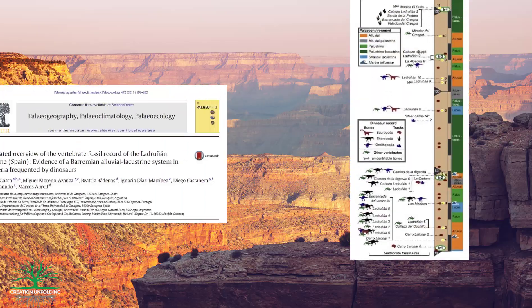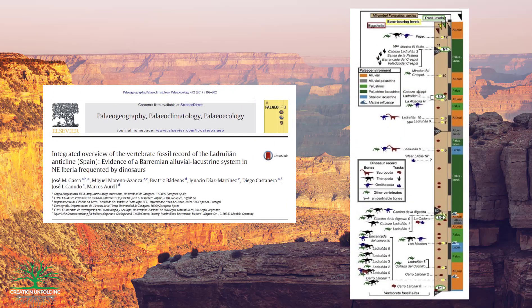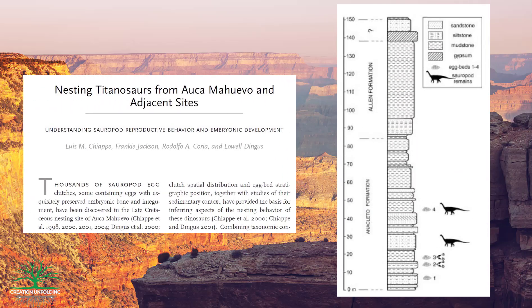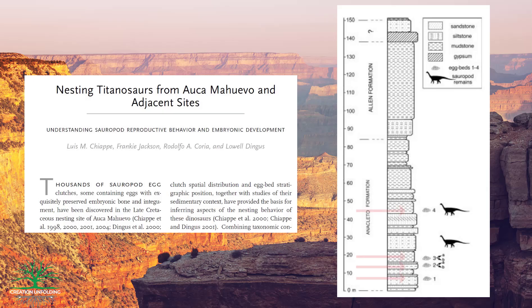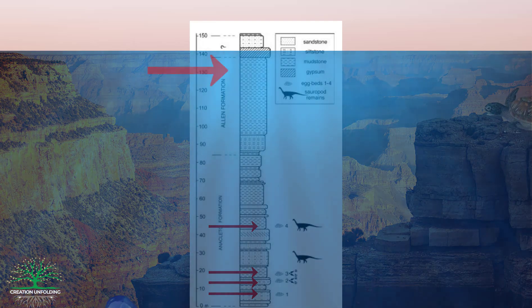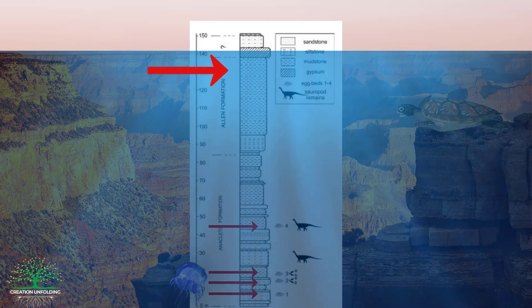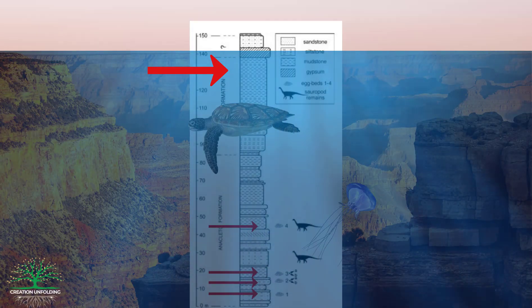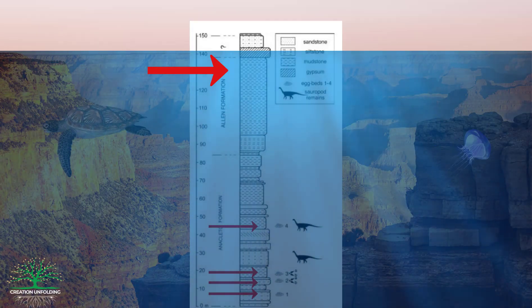Consider dinosaur footprints described in this paper from four separate horizons spanning about 600 feet of rock, or these clutches of dinosaur eggs that were also found on four separate horizons. Since these sediments are hundreds of feet thick, and since Bertholdt's hypothesis suggests that all fossil-bearing rocks in any one location were deposited at about the same time, this would mean that dinosaurs were laying eggs and walking around hundreds of feet underwater while these topmost layers were being deposited. Remember, all of this has to be occurring underwater at about the same time.